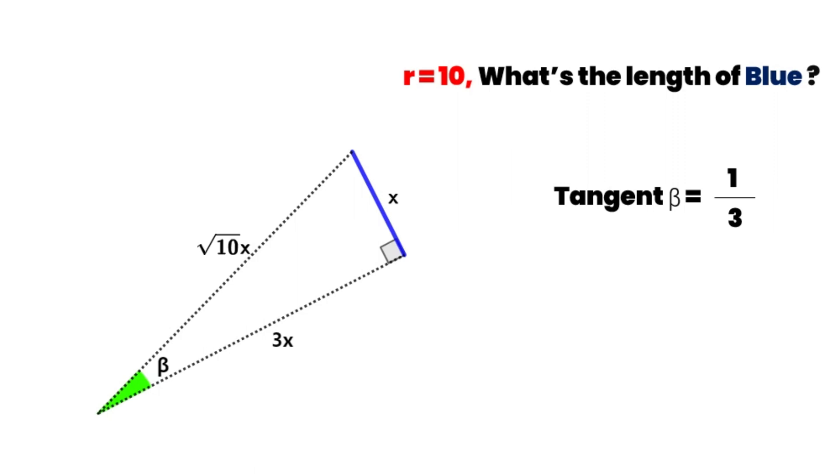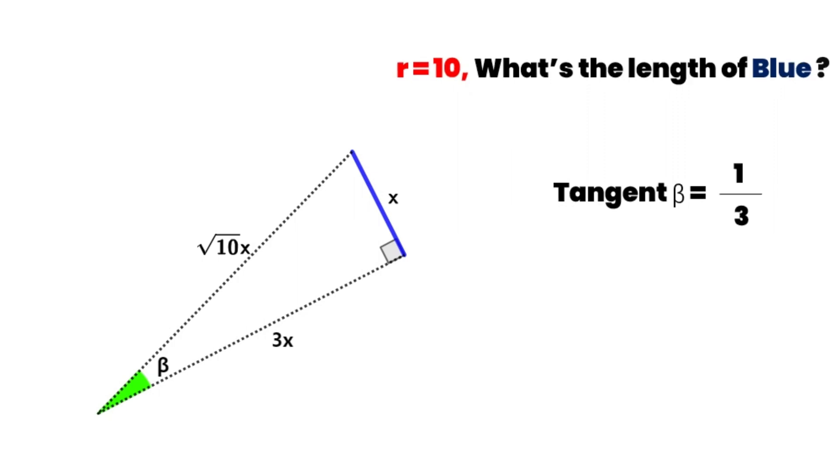And the hypotenuse is the diameter of the circle. In this problem, the radius of the circle is 10 units. The diameter of the circle is equal to 20. So the length of the hypotenuse is equal to 20.